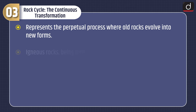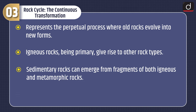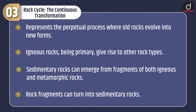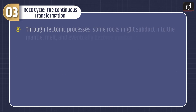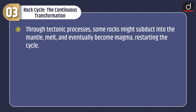Now let's look at the rock cycle — the continuous transformation. It represents the perpetual process where old rocks evolve into new forms. Igneous rocks, being primary, give rise to other rock types. Sedimentary rocks can emerge from fragments of both igneous and metamorphic rocks. Through tectonic processes, some rocks may subduct into the mantle, melt, and eventually become magma, restarting the cycle.